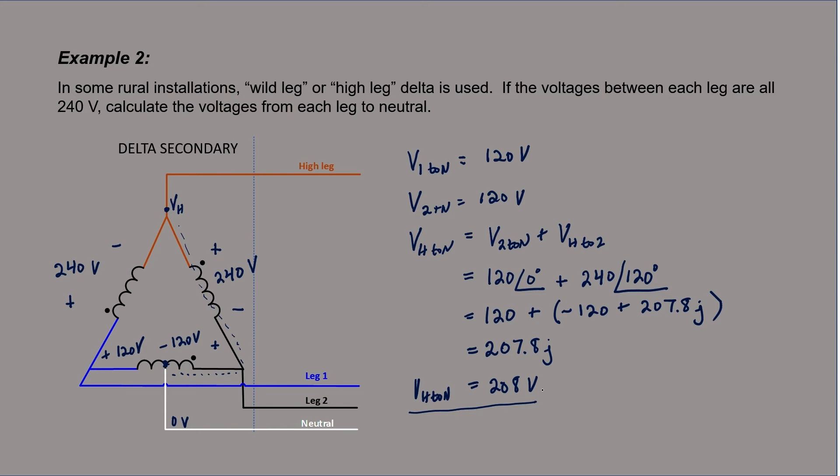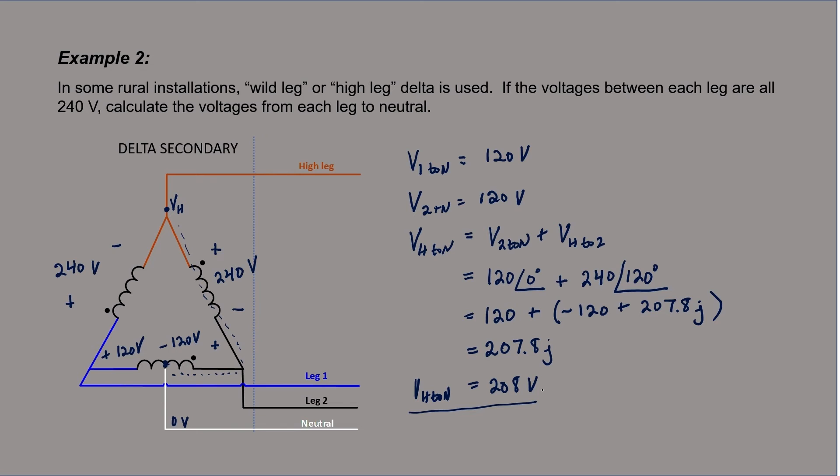The advantage of this kind of wild leg delta in a rural installation is that you can still serve single phase loads because you have 120 degrees from either leg one to neutral or leg two to neutral, and furthermore, you can serve three-phase loads at 240 volts between the phases.